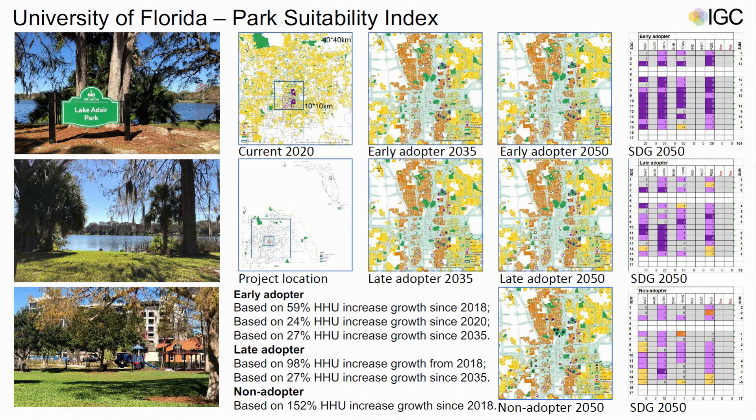Three scenarios are compared. In the early adopter, innovations taking effect at earlier dates mean parks will have less urban growth burden and much more room for planners to refine amenities and features. However, in the late and non-adopter scenarios, parks will definitely encounter severe burden from urban growth. The worst situation happens with overused parks being abandoned due to housing and environmental pressures, with room for planners only outside the urban center. The SDG scoresheet also demonstrates that the early adopter achieves more credits than late and non-adopters.